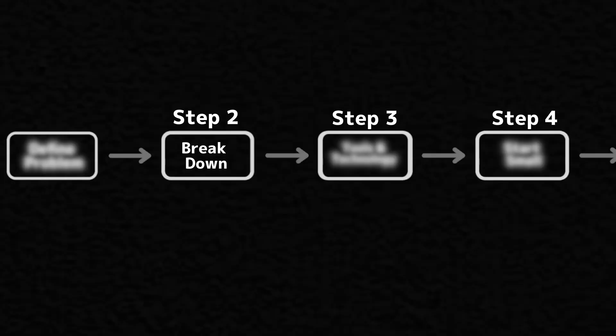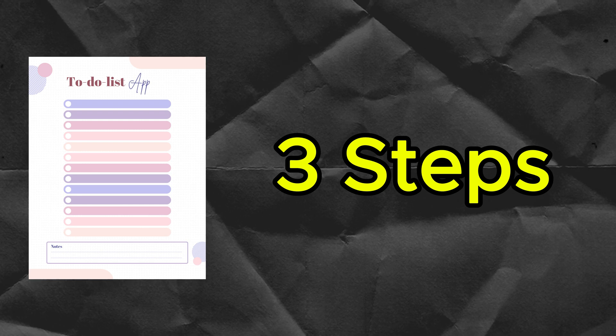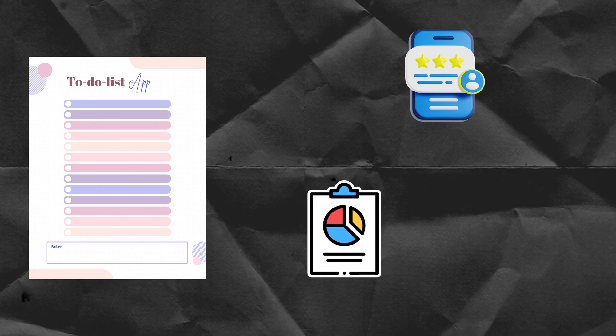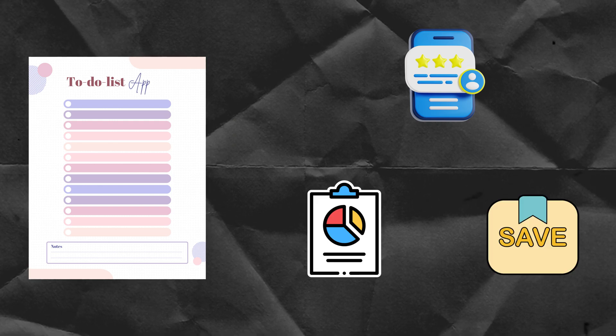The next step is to break your idea down into smaller, manageable parts. Think about the features or functions you want your app to have and the different ways you can achieve that. For the to-do list example, break it down into three simple steps: the first is the user interface, the second is data management, and the third is the ability to save and store the tasks.